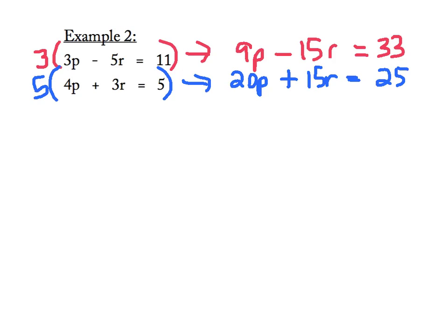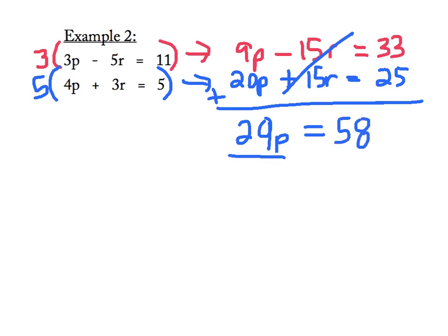I'm going to go ahead and add up my columns. In the P's, I get 29P. My R's will cancel each other out. And on the other side, I get 58. I'm going to do a quick inverse operation and divide both sides by 29. The 29s on the left will cancel out. And 58 divided by 29 equals 2.